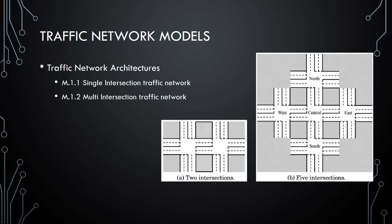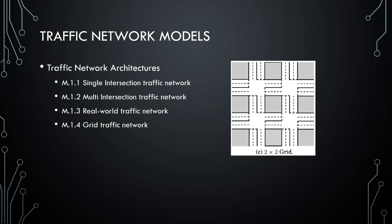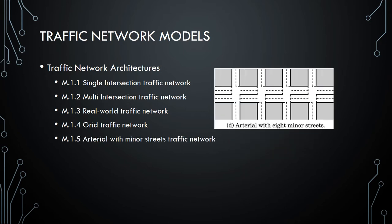Let's now delve into traffic network models. First we have a single intersection traffic network — basically a single intersection with no intersection as its neighbor. The second is a multi-intersection traffic network with two, five or more intersections. Next we have real world traffic network like a city or town, a grid traffic network like the road network in downtowns or Manhattan, and finally arterial with minor streets — a major street with smaller streets joining it at certain intervals.